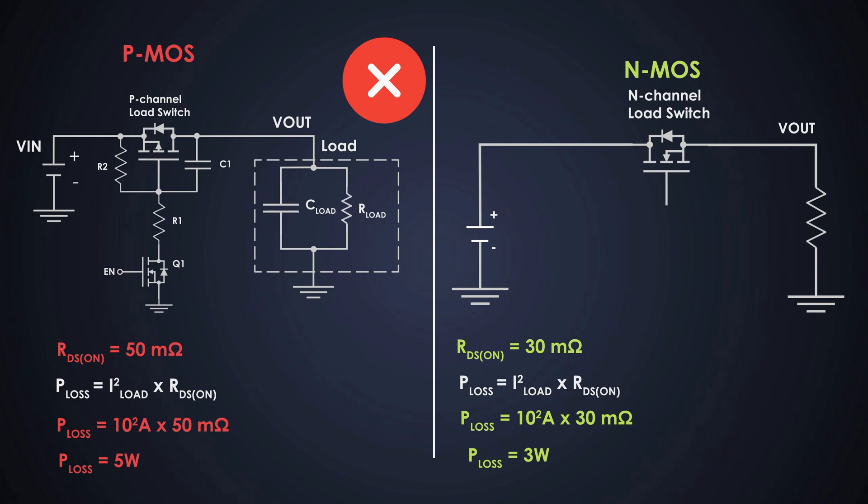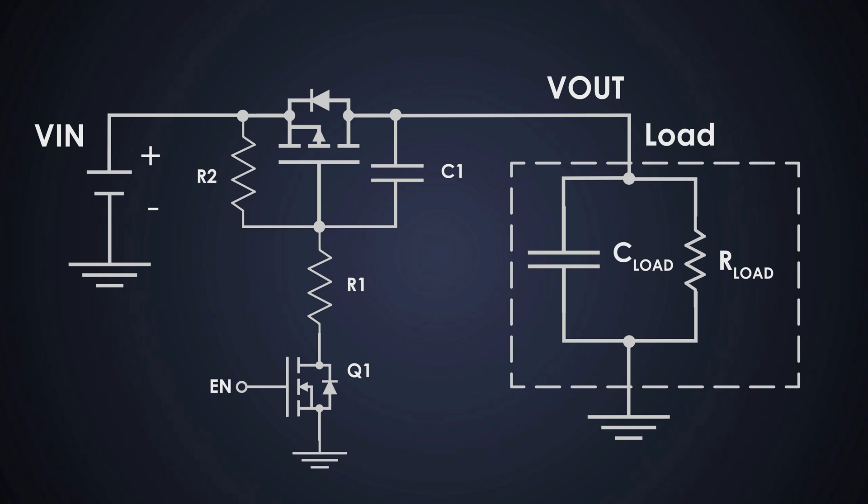Then, we can simply use an N-channel MOSFET here, right? Well, that's where the limitation comes in. The N-channel MOSFETs need an extra gate driver or charge pump circuitry to work on the high side, which adds complexity and money. At low currents, PMOS is fine and simpler. So, it is widely used.